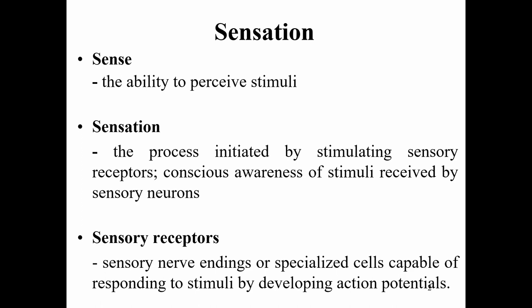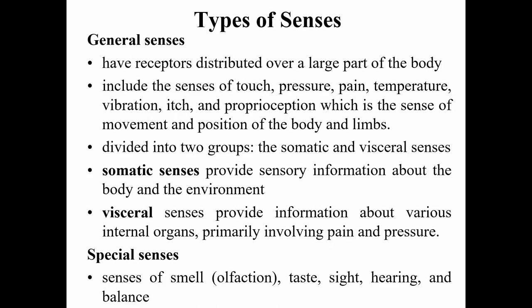We have different types of senses. First, we have our general senses, which are distributed over a large part of the body. These include touch, pressure, pain, temperature, vibration, itch, and proprioception — the sense of movement and position of the body and limbs. General senses are divided into two groups: somatic, which provides sensory information about the body and the environment, and visceral, which provides information about internal organs, primarily involving pain and pressure.